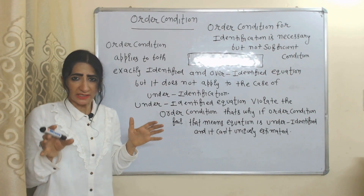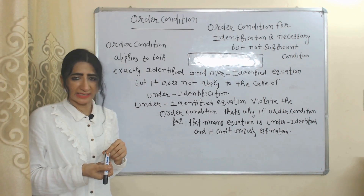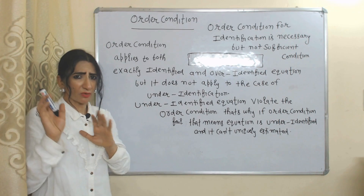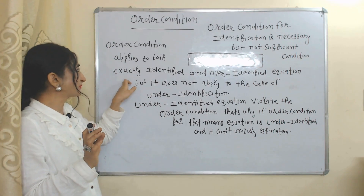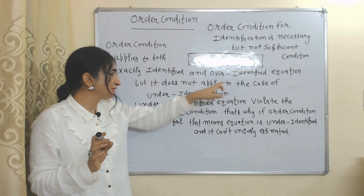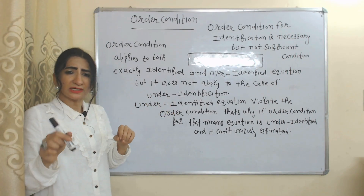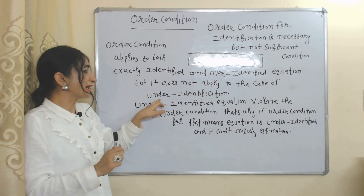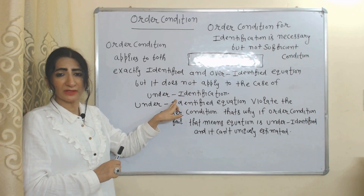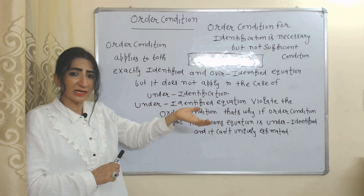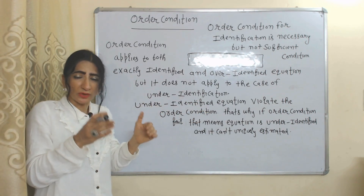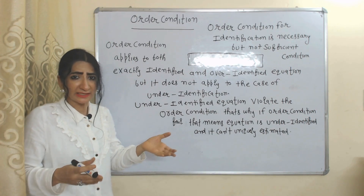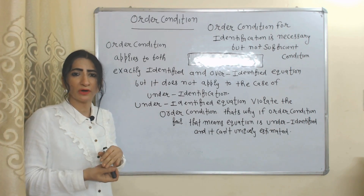In today's video we will see order condition in detail, and we will also see a problem with an example. Order condition is necessary but not sufficient. Order condition is applied in both exactly identified and over-identified cases, but it does not apply in the case of under-identified, because under-identification violates order condition. That is why if order condition fails, the equation is guaranteed to be under-identified and cannot uniquely estimate values of parameters.